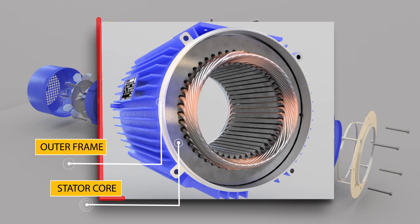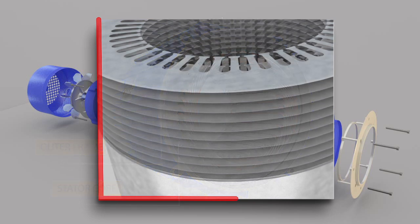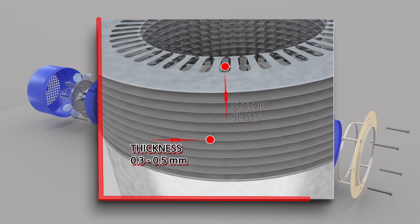The stator core is built of high grade silicon steel stampings laminations. Its main function is to carry the alternating magnetic field which produces hysteresis and eddy current losses. The stampings are fixed to the stator frame. Each stamping is insulated from the other with a thin varnish layer. The thickness of the stamping usually varies from 0.3 to 0.5mm. Slots are punched on the inner side of the stampings.